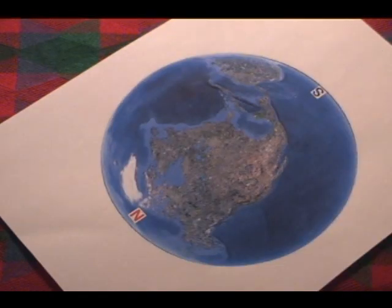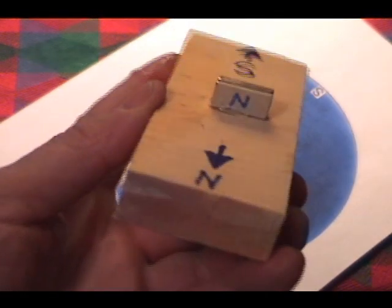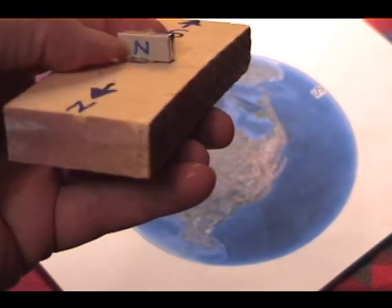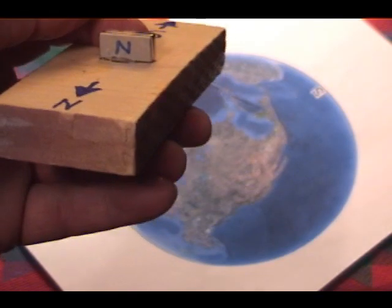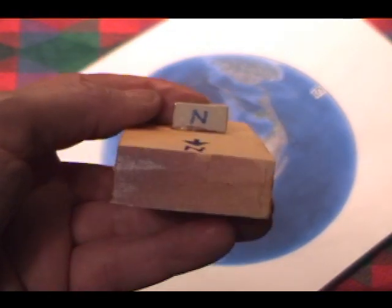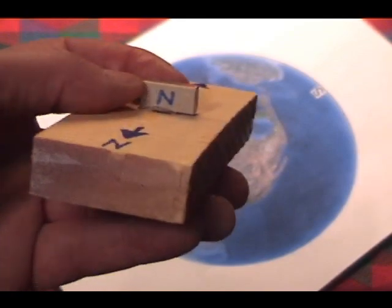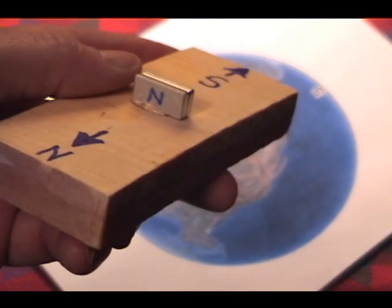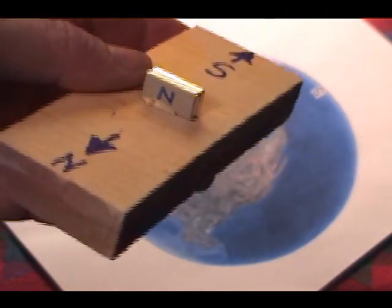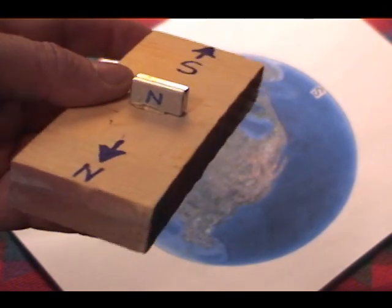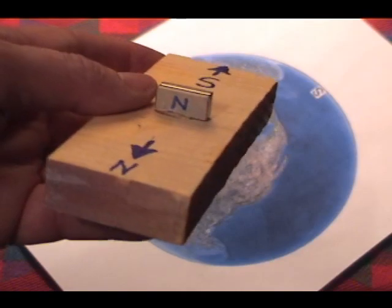So that experiment should prove to you that the north labeled face of this magnet is actually a south pole. Otherwise, it would not have oriented itself towards the north pole of the earth. Remember, like forces repel.